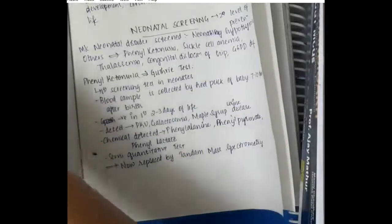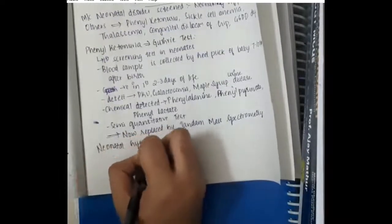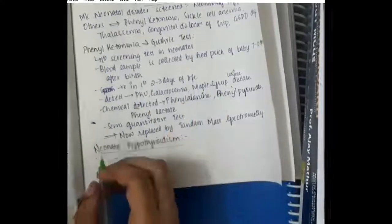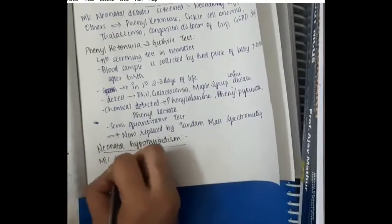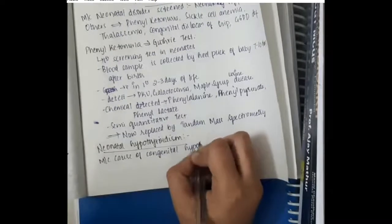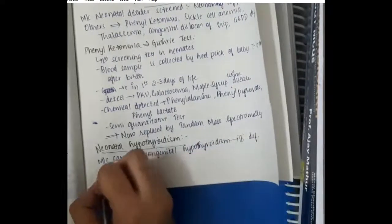Then, neonatal hypothyroidism. In neonatal hypothyroidism, most common cause of congenital hypothyroidism is iodine deficiency in the mother.